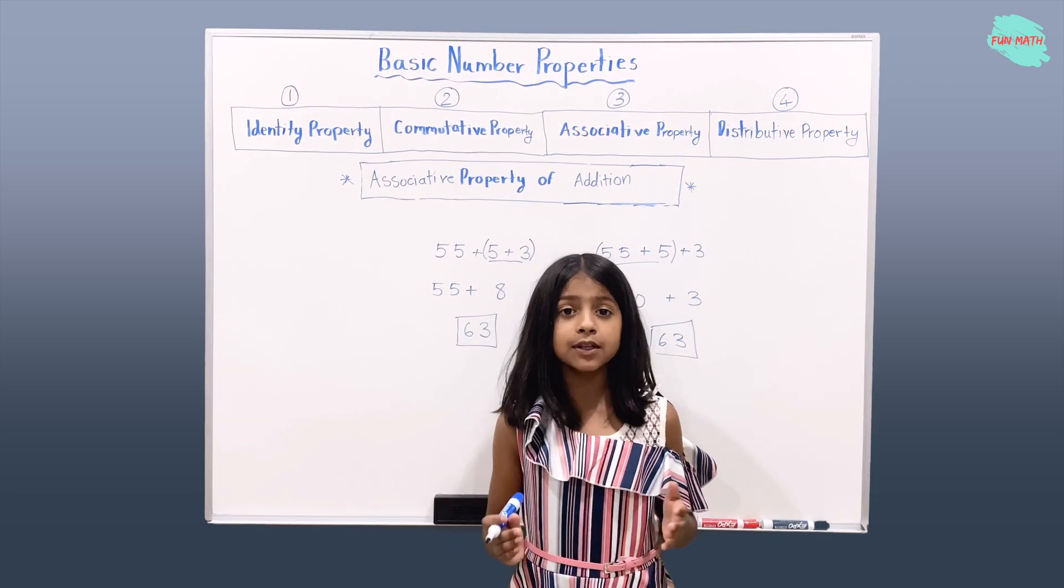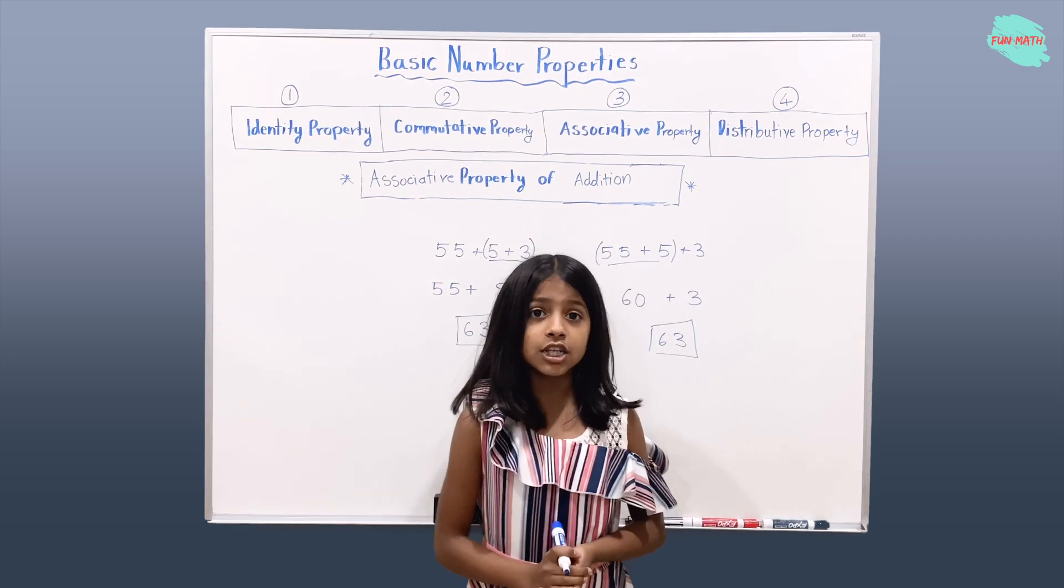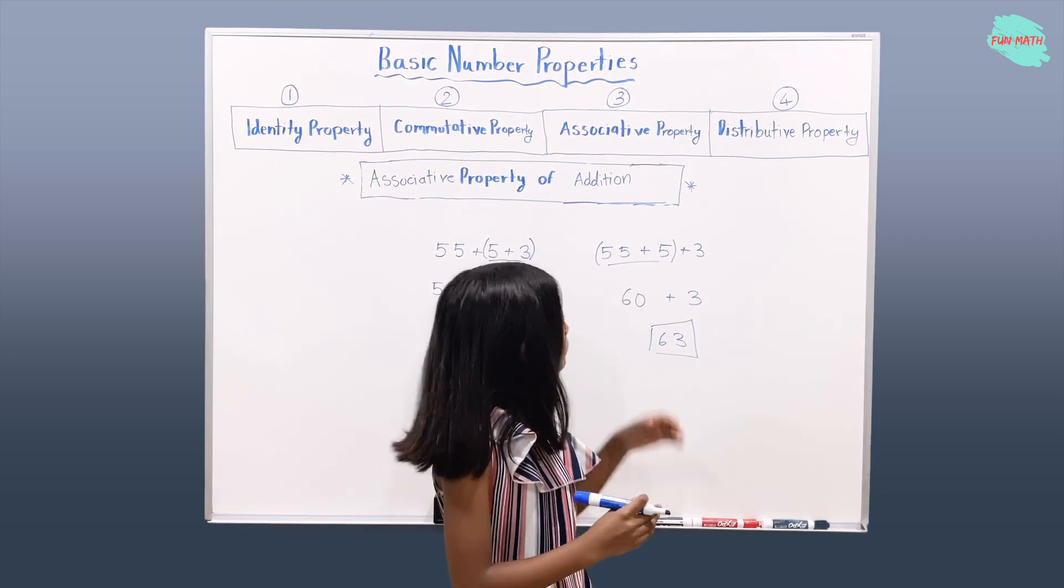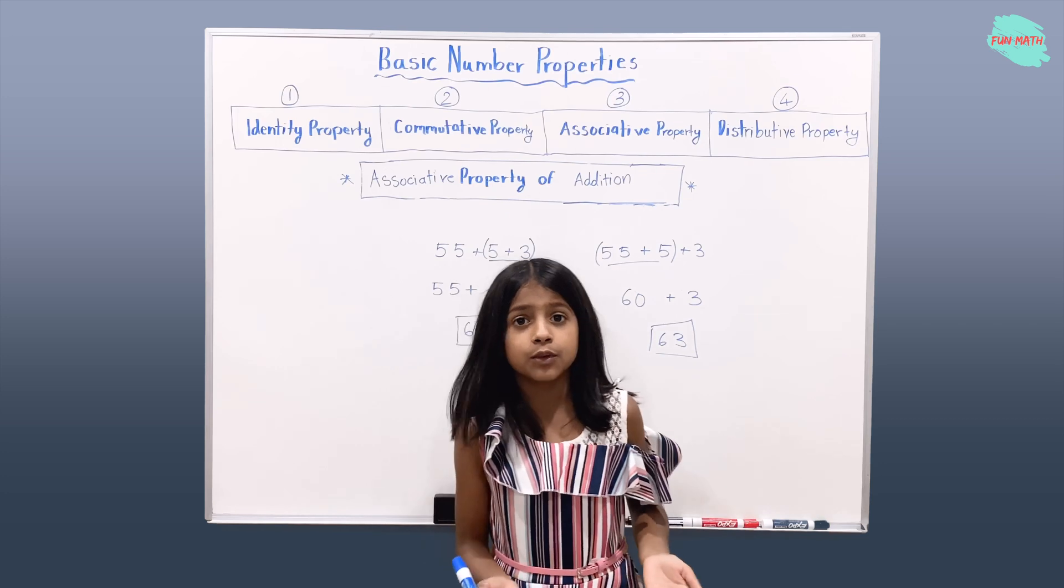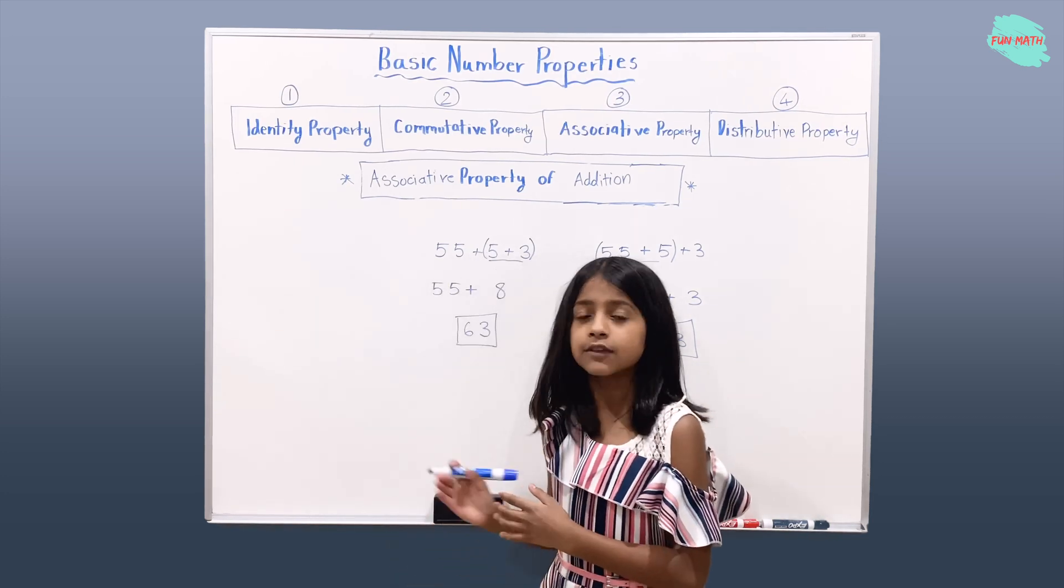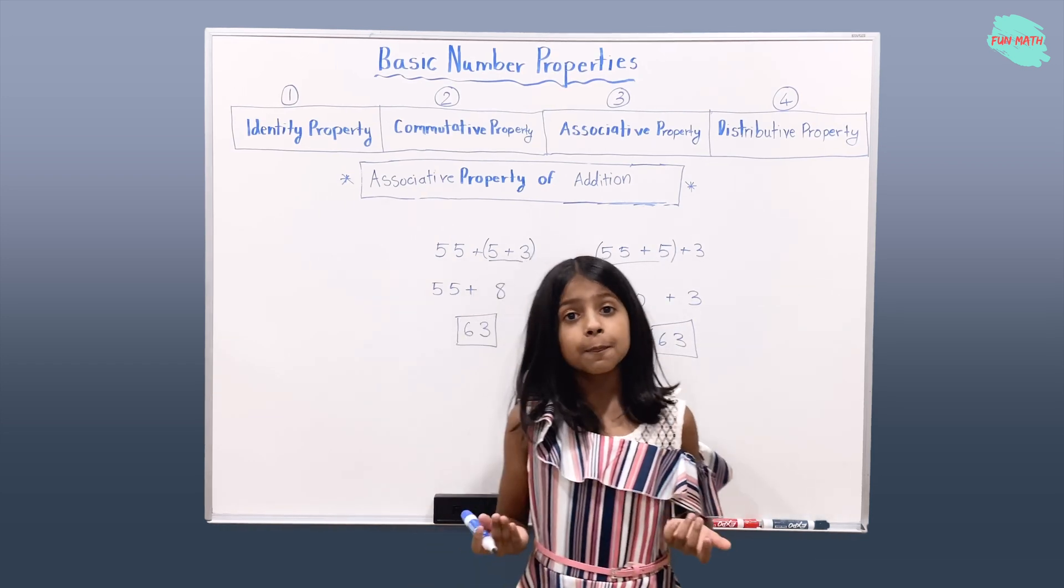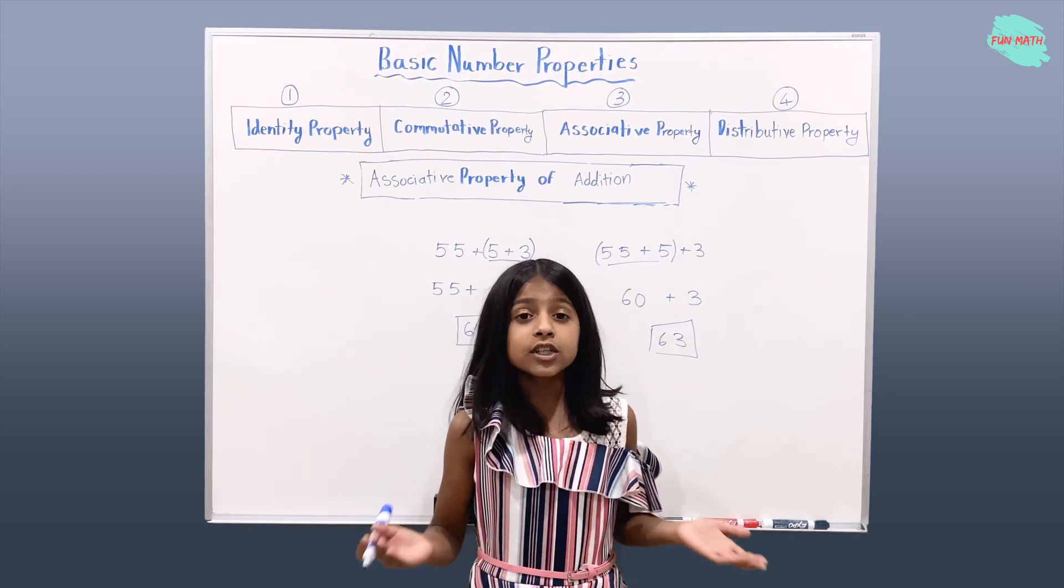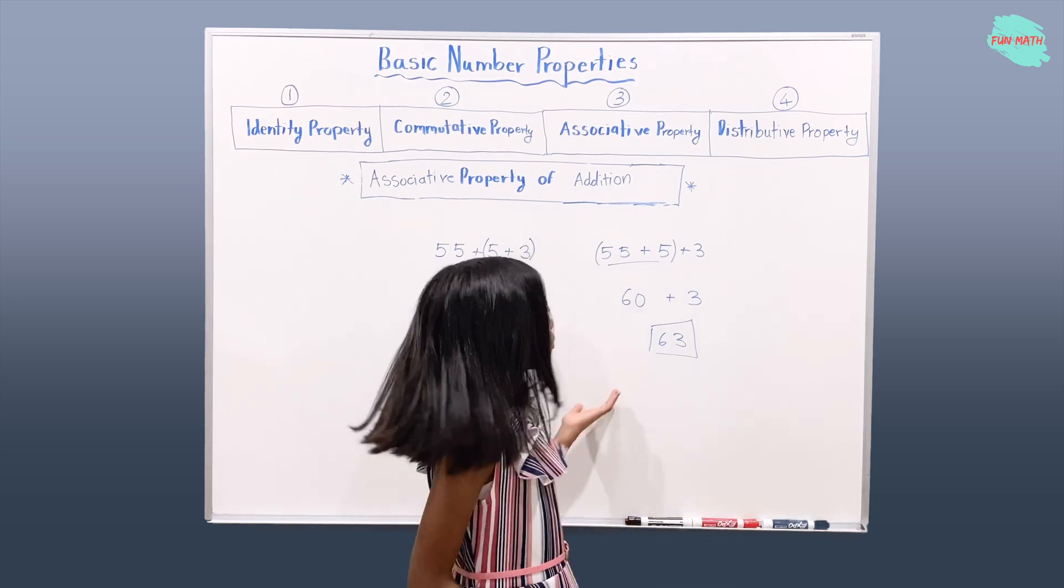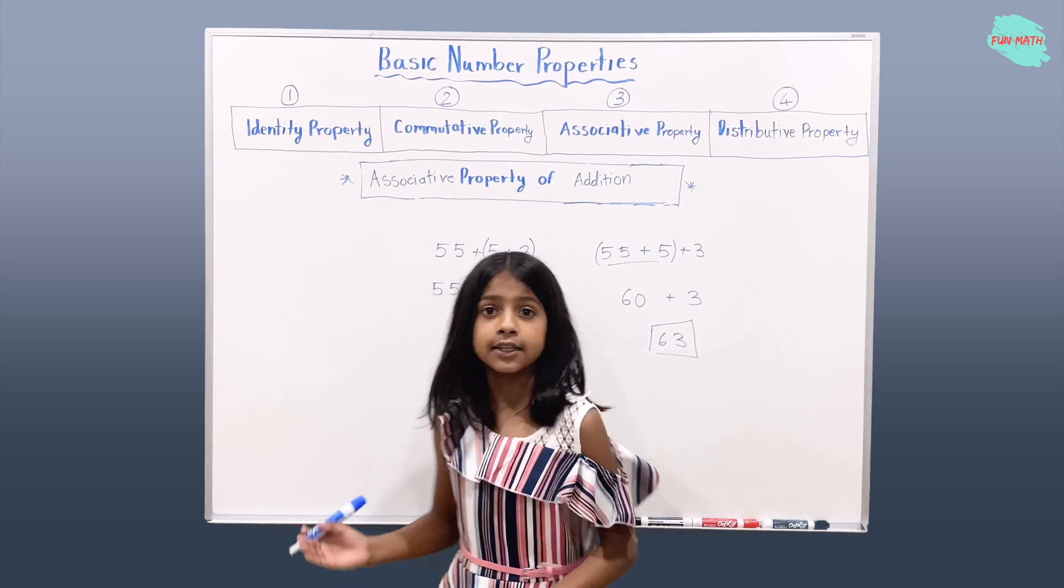So now let's review what we learned today. We've learned about the associative property of addition. The associatives were 55 and 5. Here the associatives were 5 and 3. But if you see here, which side is easier to solve? This one because 55 plus 5 is 60.